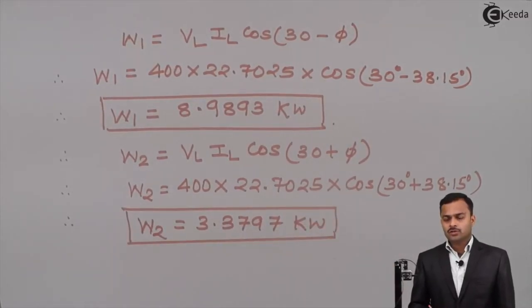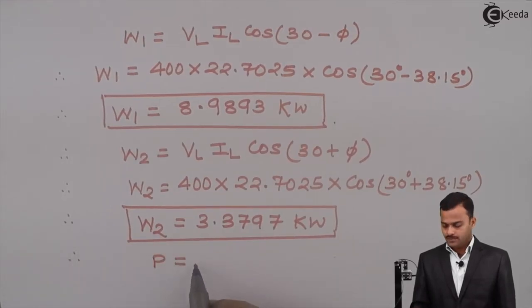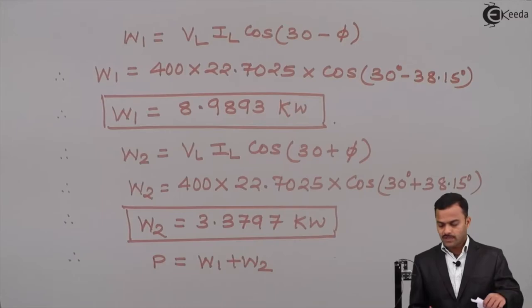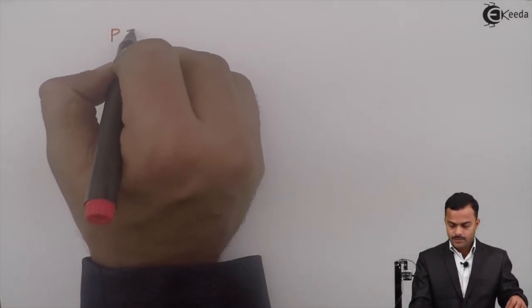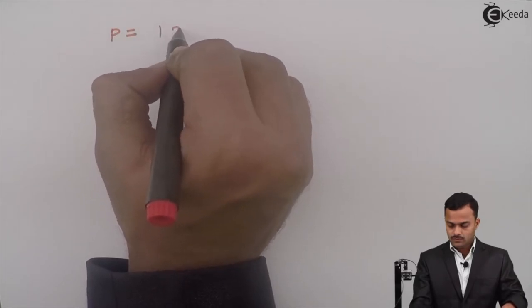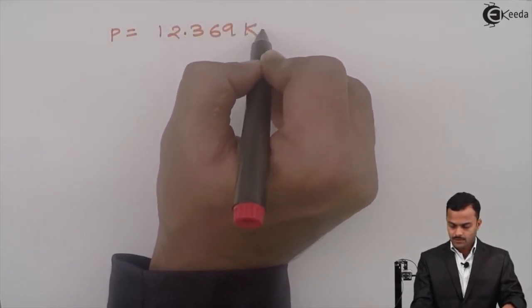Once we know W1 and W2, we can calculate total power consumed equals W1 plus W2. So if I substitute the values, P equals 12.369 kilowatts.